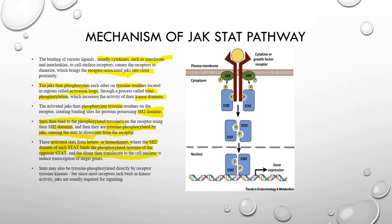The dimer translocates to the cell nucleus to induce the transcription process. The differences between transmembrane enzyme-linked and JAK-STAT pathways are two: in the transmembrane enzyme-linked, there is no gene transcription occurring, whereas in JAK-STAT, gene transcription is occurring. Second, in transmembrane enzyme-linked, a catalytic domain is present, but in JAK-STAT, no catalytic domain is present. The STATs may also be tyrosine-phosphorylated directly by the receptor tyrosine kinase, but since most receptors lack built-in kinase activity, JAKs are usually required for the signaling process.